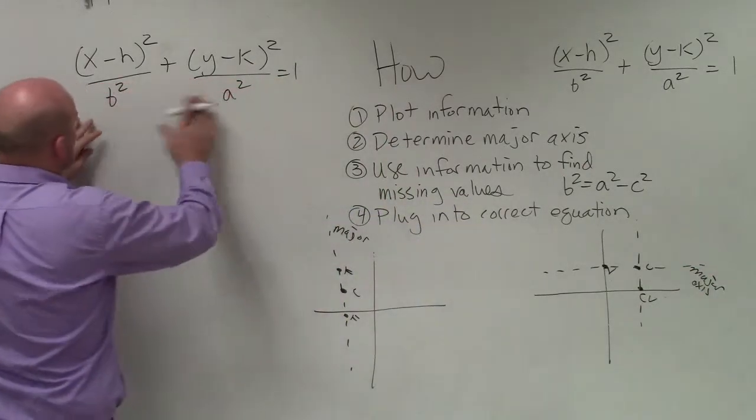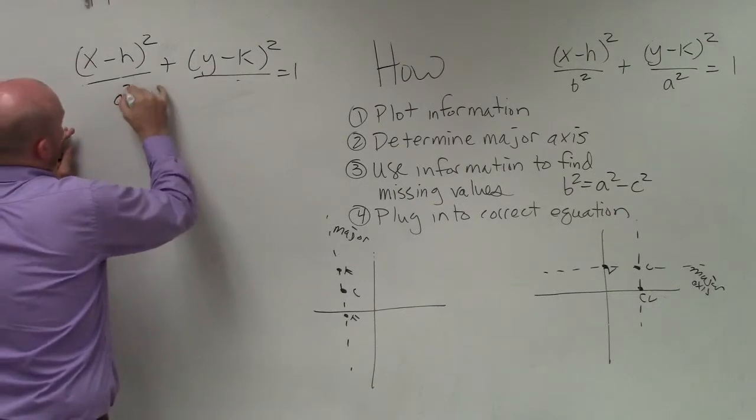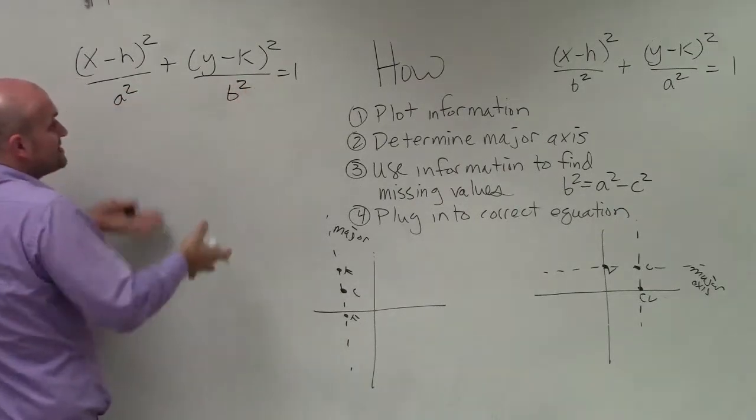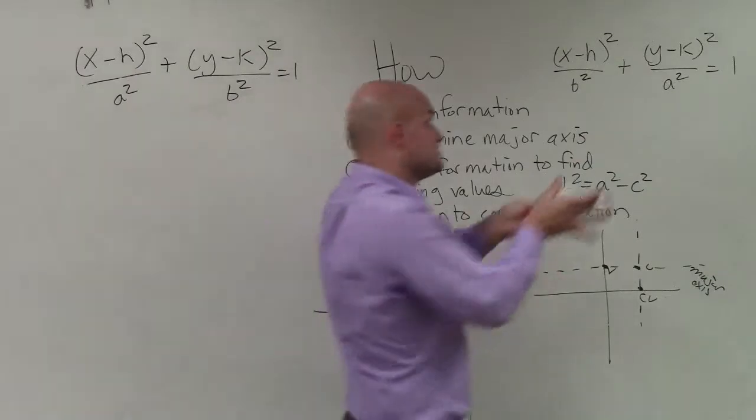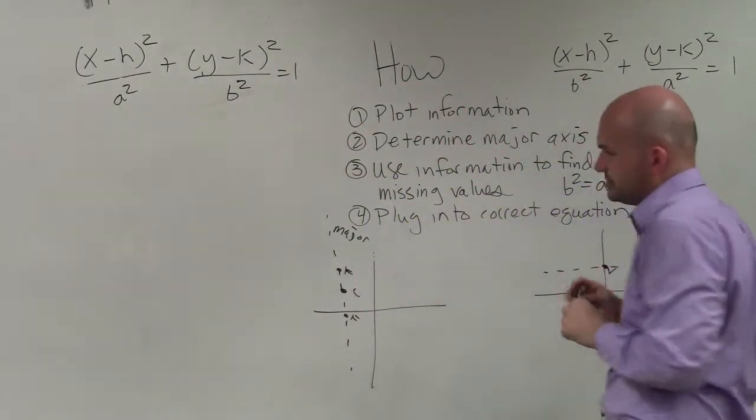Because if it's horizontal, oops, I rewrote this wrong, that would be a squared, b squared. If it's horizontal, then this is going to be the equation used. If your major axis is vertical, this is what the information you're going to use.